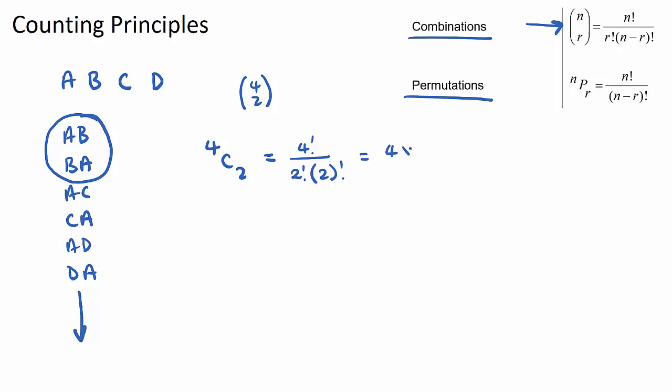And you can use some algebra techniques to simplify these without a calculator. We can go 4 times 3 times 2 times 1 and then you would have 2 times 1 for this 2 factorial and 2 times 1 and these can cancel out, these ones here and then the 4 can cancel out with the 2 to be a 2 and we'd get 6 over 1 which is 6.